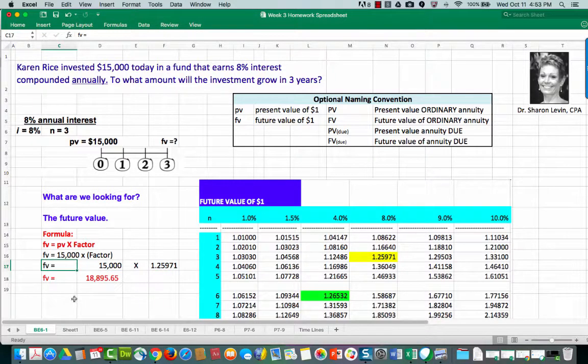So it now says the future value is equal to $15,000 times 1.25971 and the future value is equal to $18,895.65. So in other words at the end of three years this $15,000 investment will be worth $18,895.65.